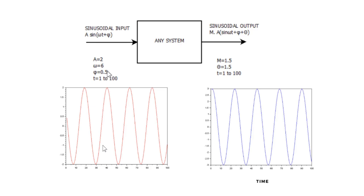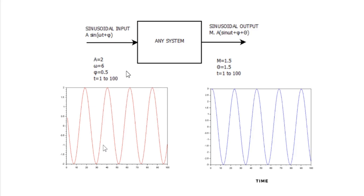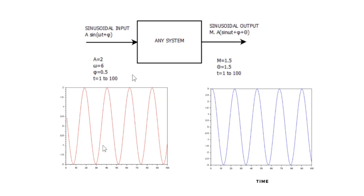Bode plots are two graphs. One is the magnitude graph and the other is the phase or the angle graph. We plot both of these graphs versus the frequency of the system. So whenever we talk about Bode plot, we are talking about frequency, magnitude and the phase. These are the three things which we are concerned with in Bode plots.